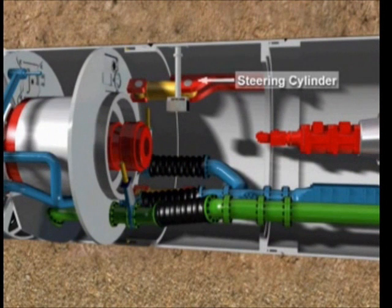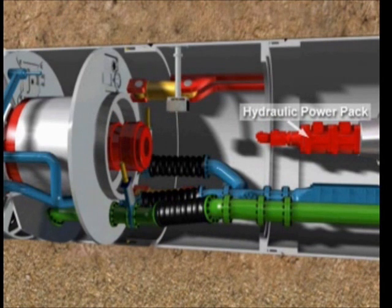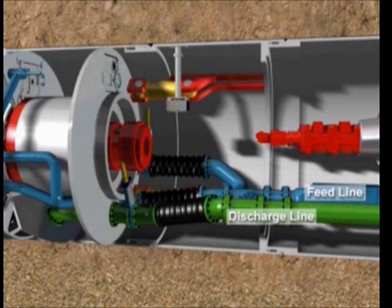The steering cylinders are situated in the first machine pipe and are used to adjust the direction of cutter head with millimeter precision thus making it possible to correct the line and level. In addition, a laser target is located in this machine pipe for determining the position of the machine. Power for the steering cylinders and cutting wheel drive are provided by the hydraulic power pack. The feed and slurry lines are equipped with the compensators to block vibration movements and to realize a length compensation.